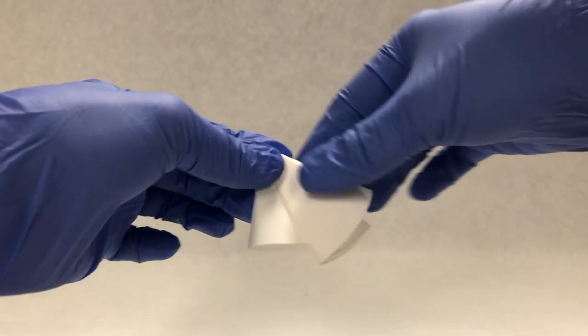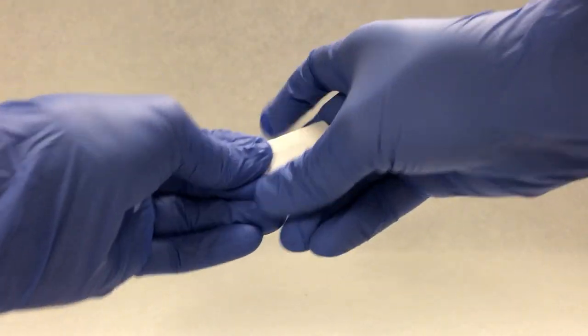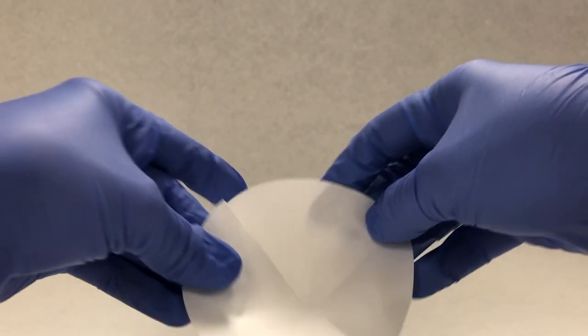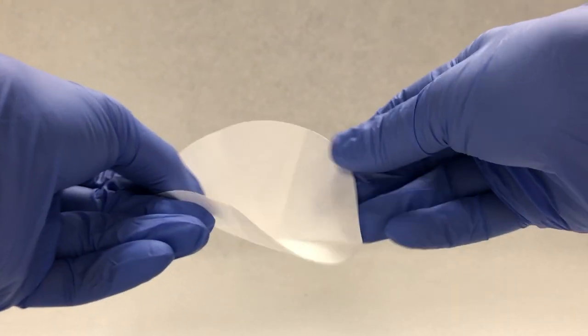First, you will need to fold the filter paper so that it fits in the funnel. Fold it in half first and make small creases around the center of the paper until it resembles a cone and place this into your funnel.